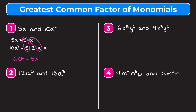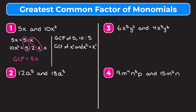Now let me show the shortcut. Find the greatest common factor of the two coefficients: GCF of 5 and 10 is 5. For the variables, take the lowest exponent: GCF of x and x squared — x is x to the first, and 1 is smaller than 2, so we take x to the first. Putting those together gives a greatest common factor of 5 times x to the first, which is just 5x. I'll use both methods for all examples so you can choose which works best for you.